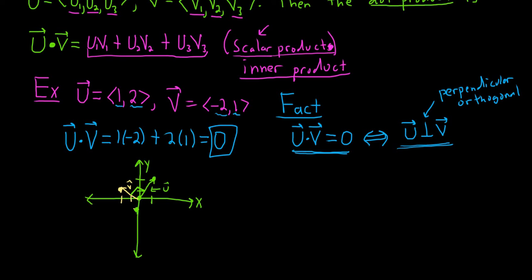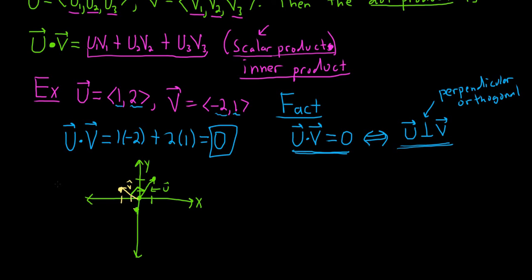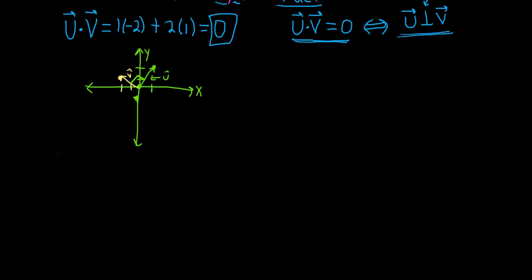All right. There's a couple of properties regarding the dot product that I want to briefly discuss. So let's go ahead and talk about those. These properties can sometimes be somewhat useful. So properties. So the first property says that the dot product is a commutative operation. So if you have u dot v, that's equal to v dot u. And it's pretty easy to see this.